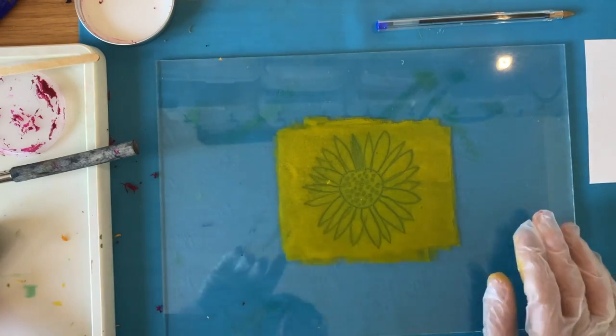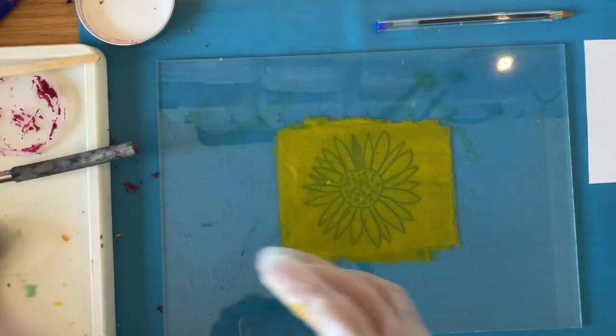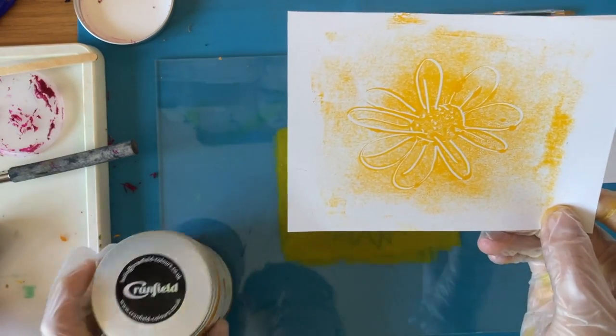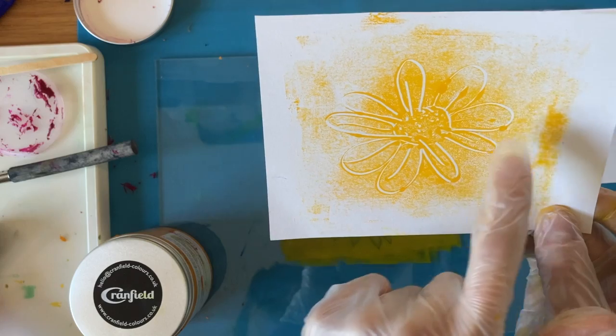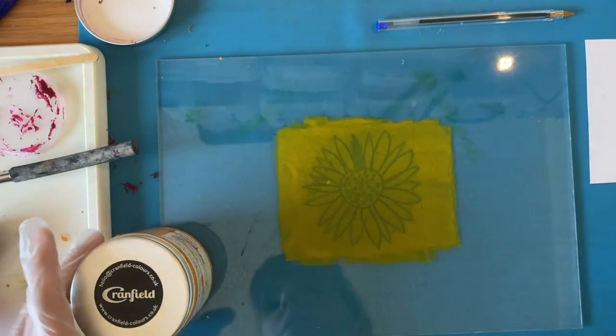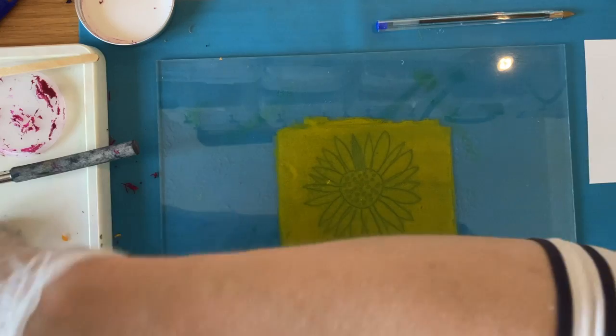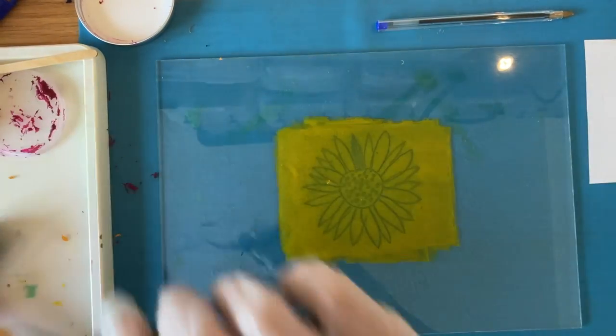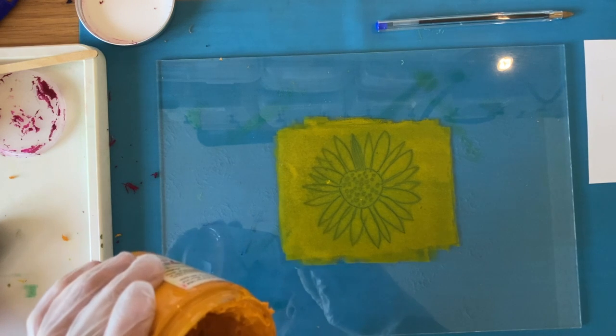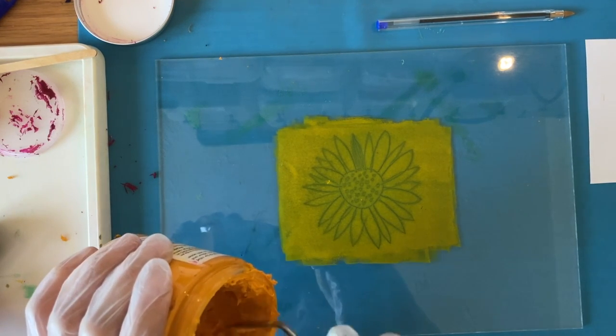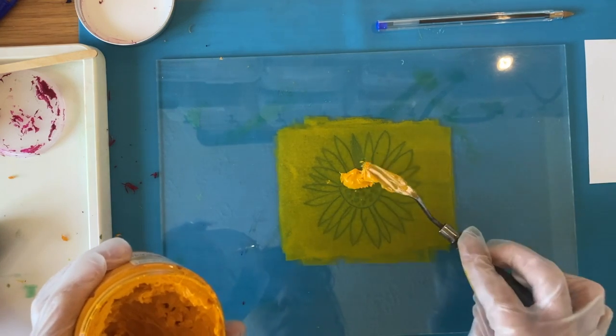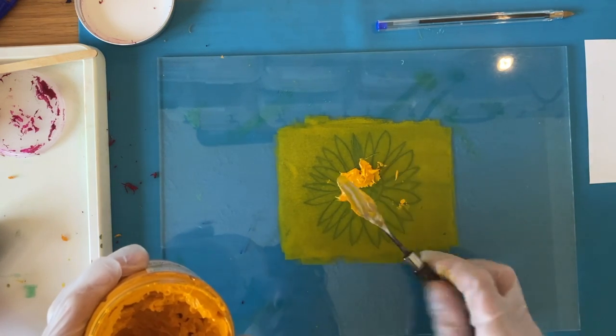Another way of doing a monoprint is where you're creating the line where the paint is missing. To do this, I'm just going to do it over the top of the last print. You take some more paint. This time you probably could just have a little bit more paint on there, it could be a bit thicker for this one. It's a bit of trial and error to see how it goes.